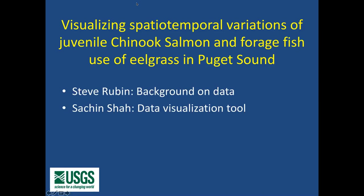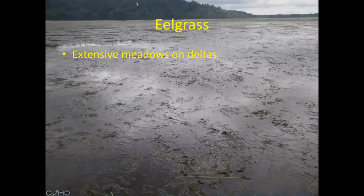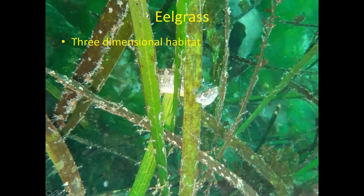Just an overview: I'm going to give enough background on the data so that when Sachin takes over describing the data visualization tool you guys can follow along. Several of us have been working on characterizing juvenile salmon and forage fish use of eelgrass, particularly on large river deltas in Puget Sound. Eelgrass is a flowering plant that occurs in the nearshore, in the deep intertidal and shallow subtidal areas, and on large river deltas it forms extensive meadows. It creates three-dimensional habitat.